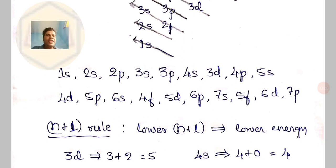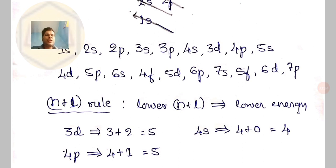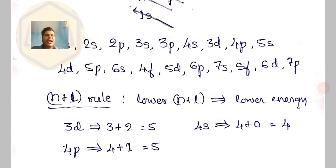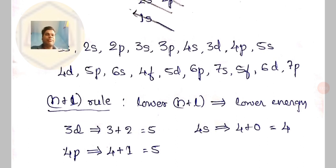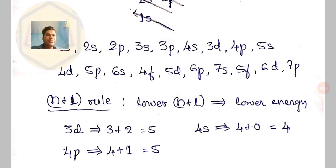Where you have a higher n plus l value, the orbital will have higher energy. For illustration, take 3d and 4s. It has been said that 4s is filled first, then we come to 3d — this can be explained by the n plus l rule. For 3d, the principal quantum number n is 3 and for d orbitals the azimuthal quantum number l is 2, so n plus l equals 5. For 4s, n is 4 and l for s subshell is 0, so n plus l equals 4. Comparing: 3d has n plus l of 5, so it has higher energy; 4s has n plus l of 4, so lower energy. Therefore we fill 4s first, then come to 3d — lower energy orbitals should be filled with electrons first according to Aufbau.